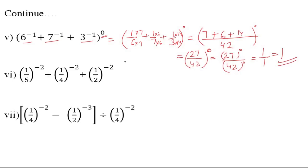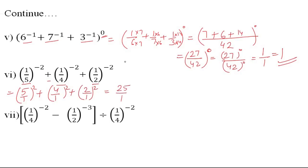Sixth: here the 7th law will be applied. The question is: 1 upon 5 whole raise to the power negative 2 plus 1 upon 4 whole raise to the power negative 2 plus 1 upon 2 whole raise to the power negative 2. Applying the 7th law to make exponents positive: we get 5 upon 1 whole raise to the power 2 plus 4 upon 1 whole raise to the power 2 plus 2 upon 1 whole raise to the power 2. That gives 25 plus 16 plus 4, which equals 45. That is the final answer.